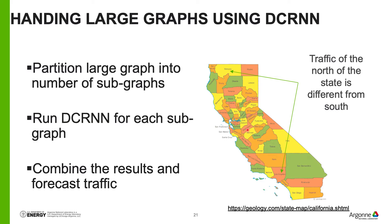A single DCRNN cannot model large graphs. To address this, we use graph partitioning methods. In a recent exercise, we modeled the entire California network with more than 12,000 sensor locations. We partitioned the whole graph into a number of subgraphs, used DCRNN for each subgraph, and combined all the models to provide forecasts for the entire state. We also account for overlapping regions at boundary layers to handle the redundancy there.